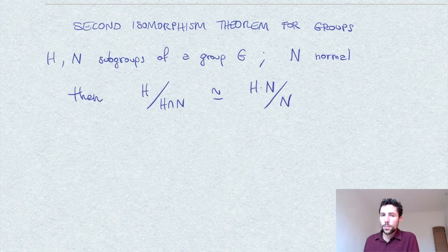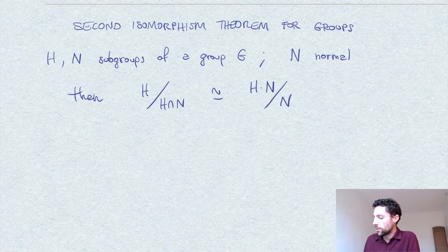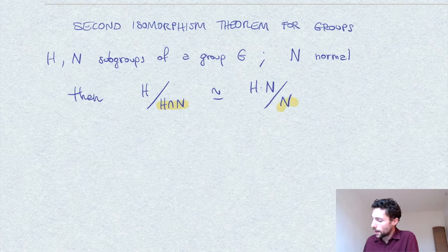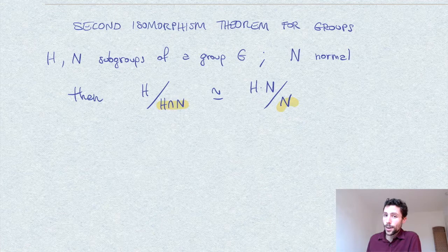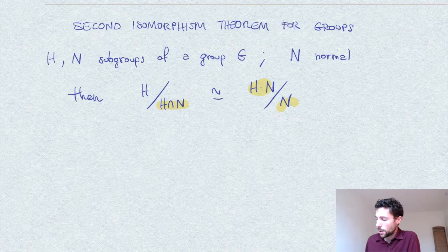Before going into the details, we immediately observe that we have quotients here, and quotient groups are allowed only when the subgroup by which we are quotienting is normal. Therefore we must verify that H∩N is a normal subgroup of H, and that N is a normal subgroup of the product HN.